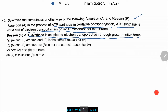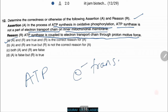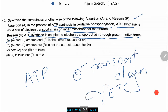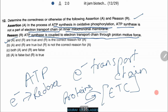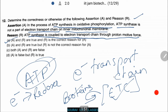The answer is A. ATP synthase is not a part of the electron transport chain (ETC) because ETC involves proteins that transfer electrons according to redox potential. ATP synthase works only when proton motive force is present. Thus, ATP synthase is coupled to the ETC through this proton motive force.